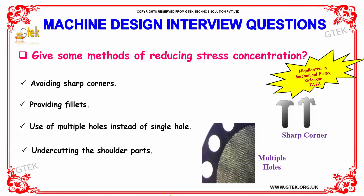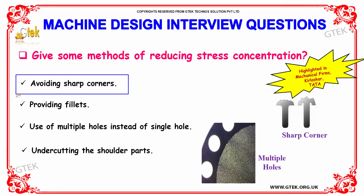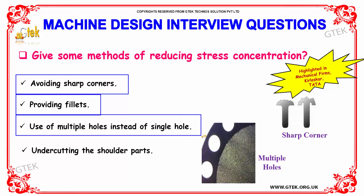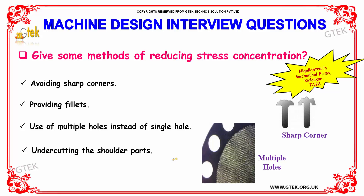What are the methods of reducing stress concentration? The methods are: avoiding sharp corners, providing fillets, using multiple holes instead of a single hole, and undercutting the shoulder parts.